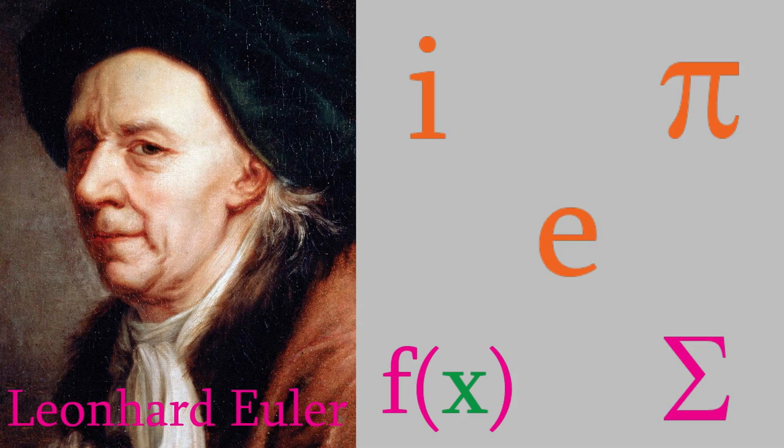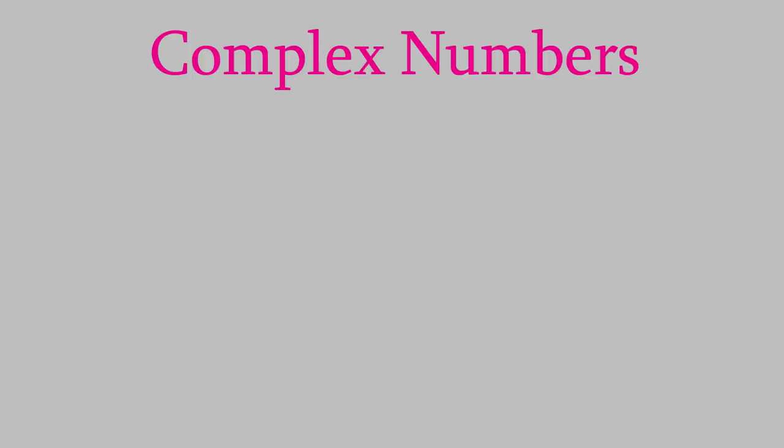He did all this work despite becoming almost blind in his left eye after an illness when he was about 30 years old, and losing sight in his right eye after a botched cataract surgery in his 50s. Anyway, one of the areas that Euler worked on is called complex numbers.